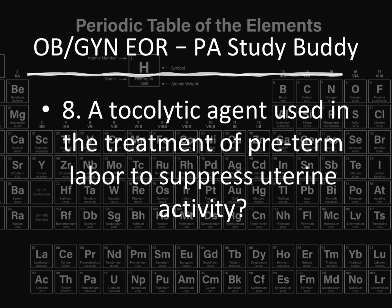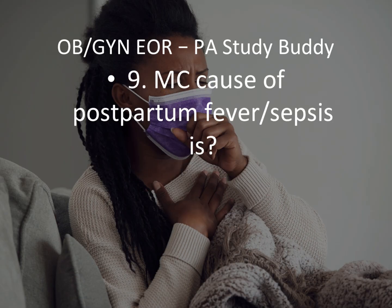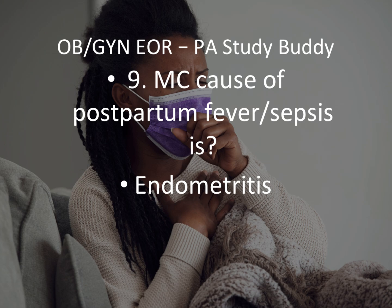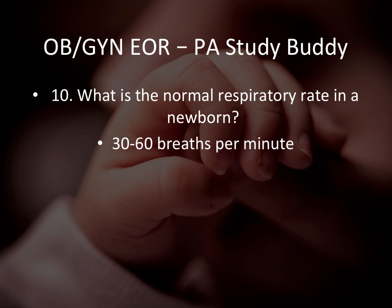Magnesium sulfate is a tocolytic agent used in treatment of preterm labor to suppress uterine activity. Question 9: The most common cause of postpartum fever — that would be endometritis. Every time you see fever in a postpartum female you should be thinking about endometritis. Question 10: What is the normal respiratory rate in newborns? That would be 30 to 60 breaths per minute — normal for newborns.